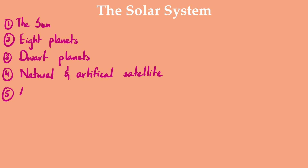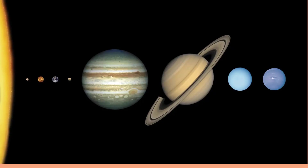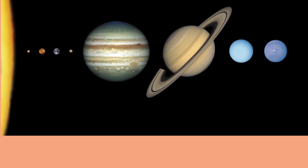The last thing we will talk about is asteroids and comets. These are two different things — there are some major differences between them and we will talk about that shortly. A study of this is not complete without a diagram, so let's move to the diagram. This is a pretty simplified diagram of the solar system.